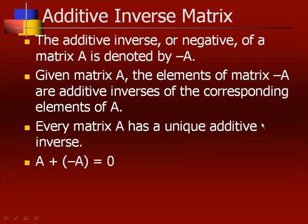The additive inverse, or the negative of a matrix A, is denoted by negative A. Given matrix A, the elements of matrix negative A, or opposite of A, are the additive inverses of the corresponding elements of A. That means every element in the inverse will have a sign opposite of that in the original matrix. Every matrix A has a unique additive inverse, which means for every matrix there is only one matrix that is the inverse. Matrix A plus the inverse is equal to 0.